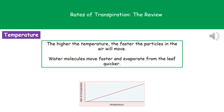The second factor to consider is temperature. The general pattern here is that the higher the temperature, the faster the rate of transpiration. The reason for that is that as we increase the temperature, the particles will start moving faster, meaning they're going to be changing from liquid to gas and therefore evaporating quicker.